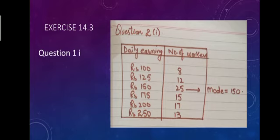daily earning and number of workers. Daily earning 100 rupees, 8 workers; 125 rupees, 12 workers; 150 rupees, 25 workers; 175 rupees, 15 workers; 200 rupees, 17 workers; 250 rupees, 13 workers. You are going to find out the mode. You know the definition of mode: